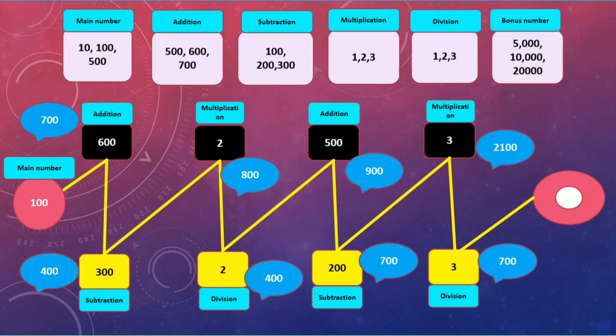Up to this zone my score is 700. Now I add the bonus number: 700 plus 5,000 is equal to 5,700. So 5,700 is my total score in this task. I hope you all understood this task. Thank you.